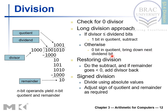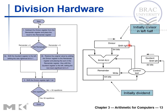The division hardware performs the division operation where the divisor is 64 bits, the ALU is also 64 bits, and the remainder is 64 bits. The operation is performed step by step following this algorithm and flowchart. After each iteration, the divisor is right-shifted by one bit, and this is how the operation is performed.